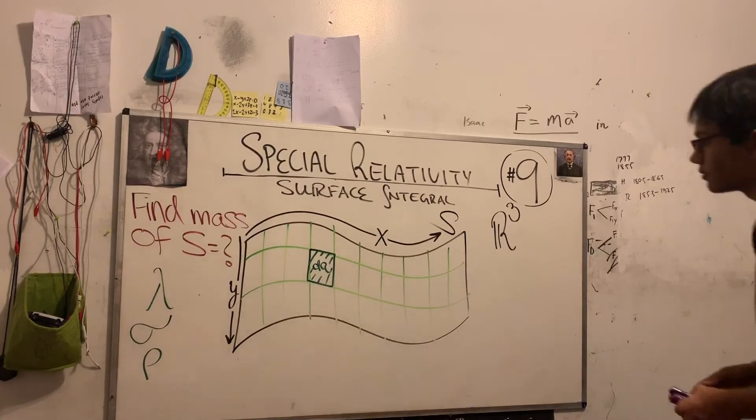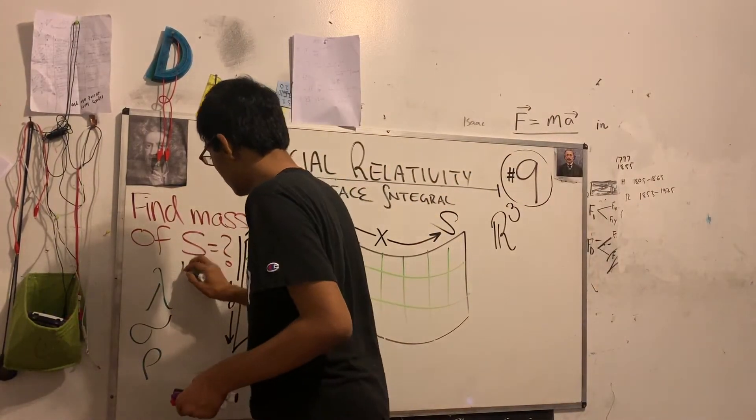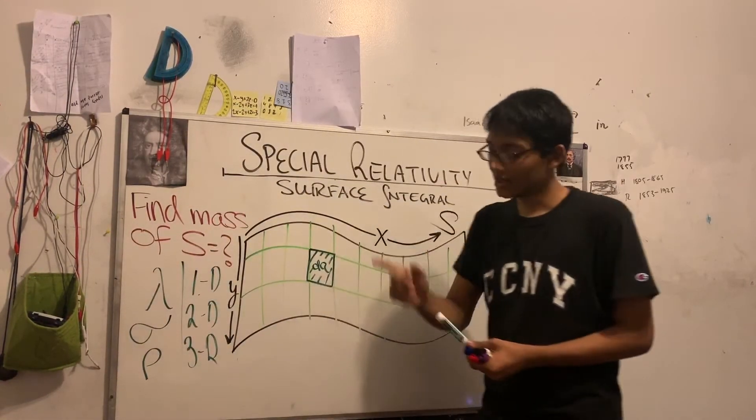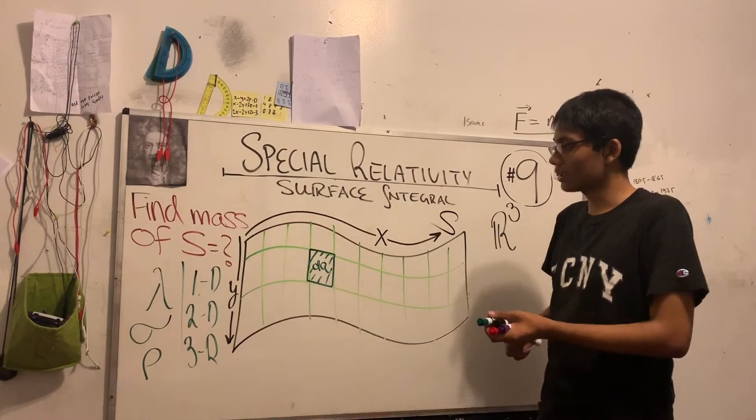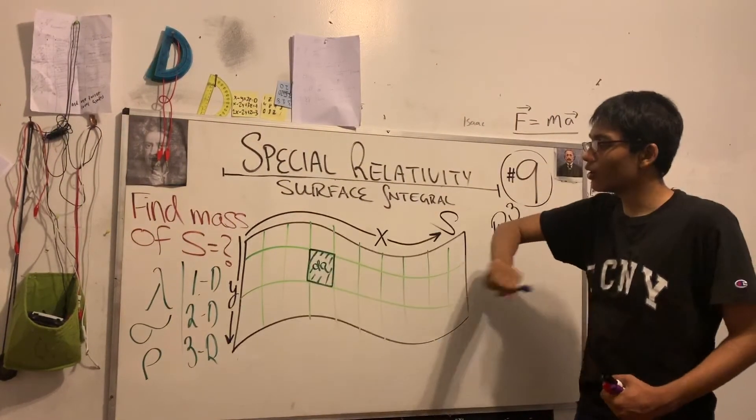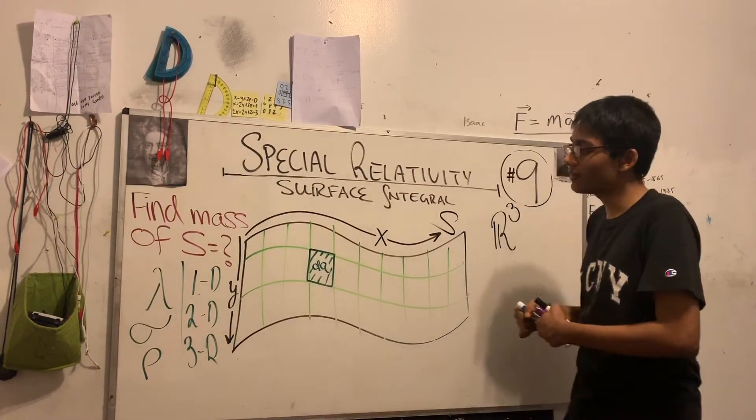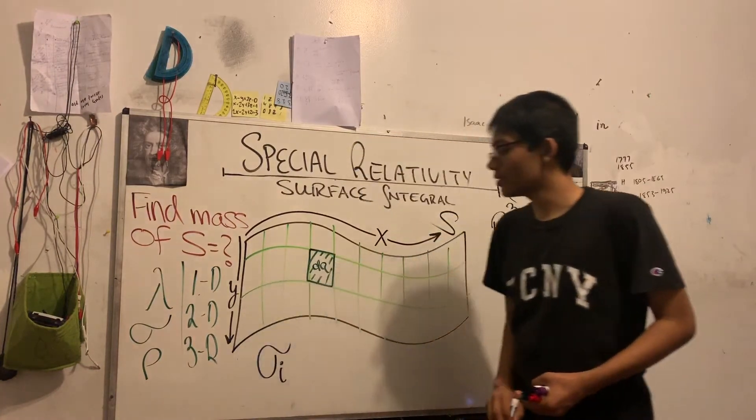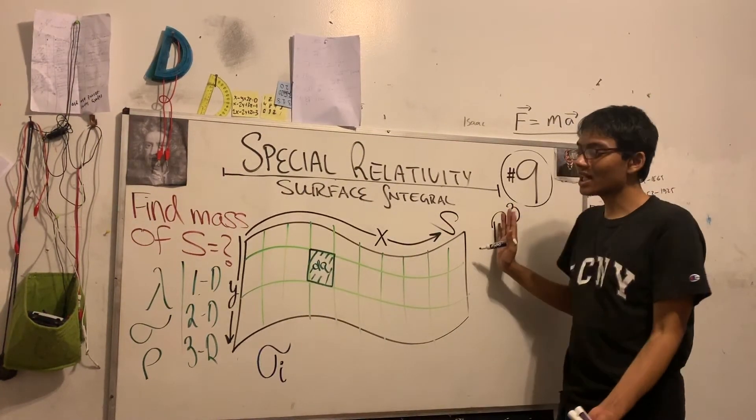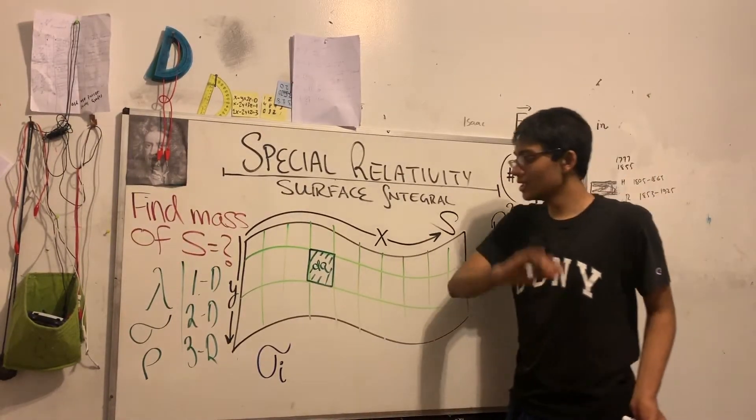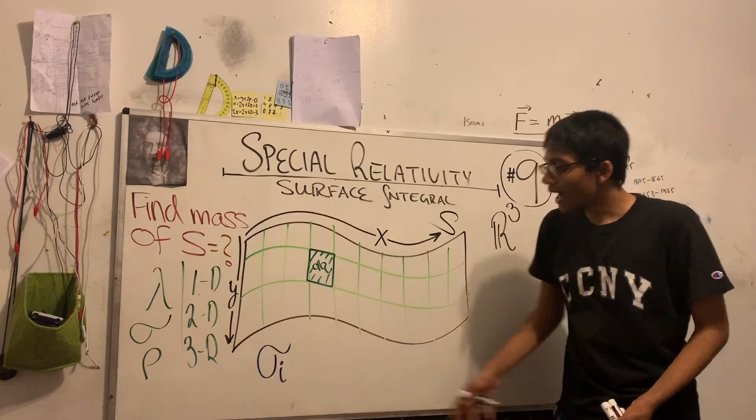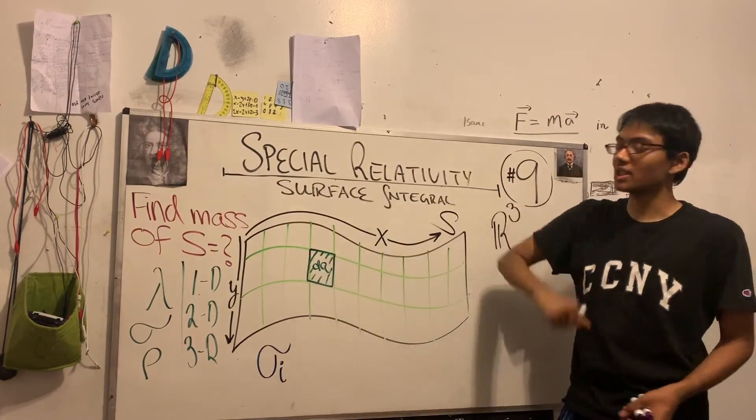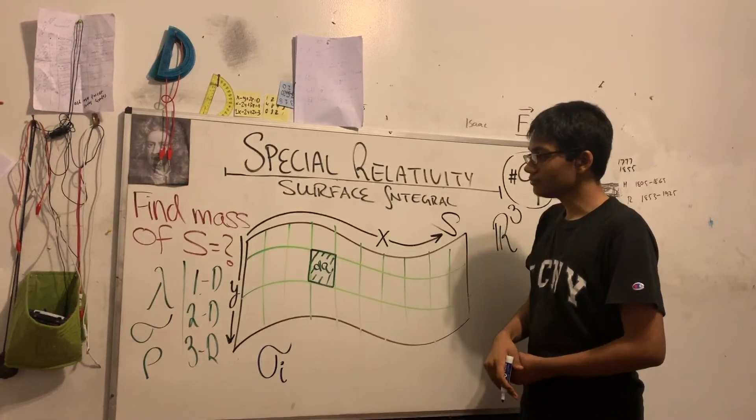So the density of this infinitesimally small region that we denote as dA is going to be lowercase sigma of that infinitesimally small region. The density of that very small region we will denote as lowercase sigma sub i. I, of course, denotes my position - what region I'm considering.